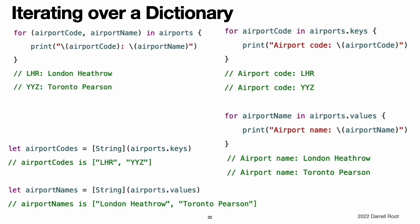Iterating over a Dictionary. You can iterate over the key-value pairs in a dictionary with a for-in loop. Each item in the dictionary is returned as a (key, value) tuple, and you can decompose the tuple's members into temporary constants or variables as part of the iteration. For more about the for-in loop, see for-in Loops. You can also retrieve an iterable collection of a dictionary's keys or values by accessing its keys and values properties. If you need to use a dictionary's keys or values with an API that takes an array instance, initialize a new array with the keys or values property. Swift's dictionary type does not have a defined ordering; to iterate in a specific order, use the sorted() method on its keys or values property.